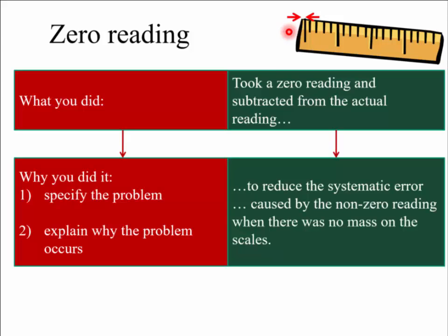Why do you do that? It's to reduce systematic error, because it will consistently push things to one direction, and it's caused by a non-zero reading, oh, in this example that I've given here, by no mass on the scales. So it could be for a measurement with a ruler, or it could be, say, measuring the mass of something. And zero readings come up all the time, so they're really good to keep an eye on.